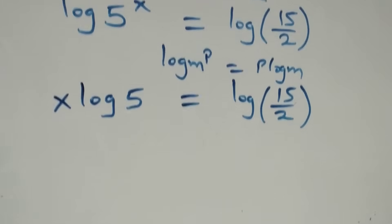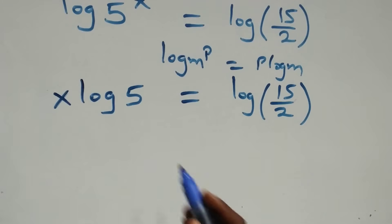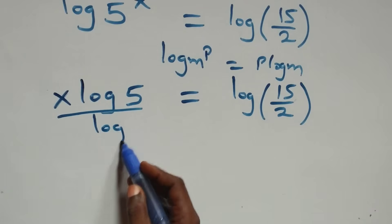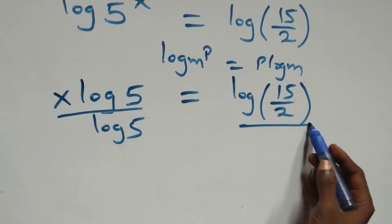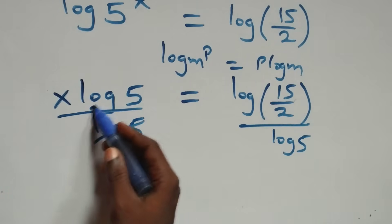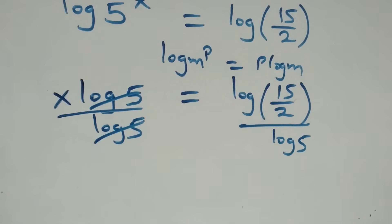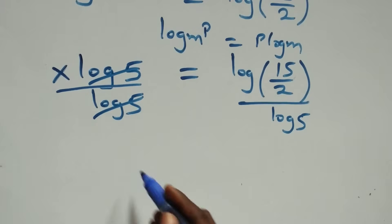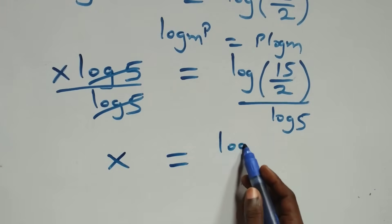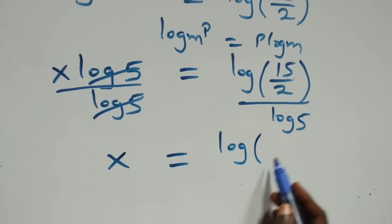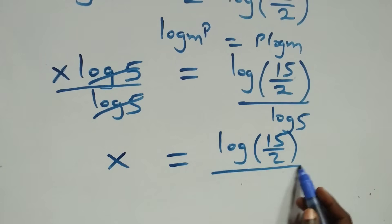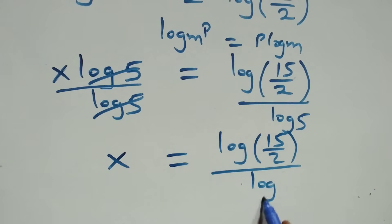The next step: we divide both sides by log 5. Divide this side by log 5 and divide this side by log 5 also, which implies log 5 cancels each other. We are left with x equals to log(15/2) divided by log 5.